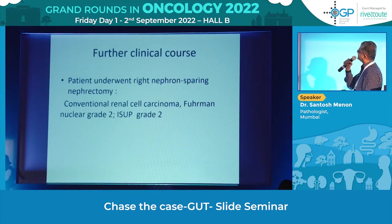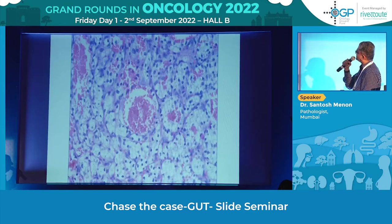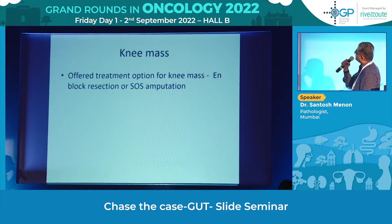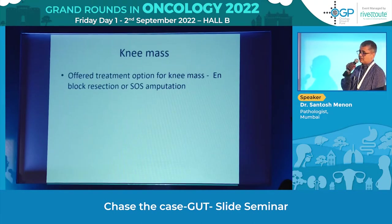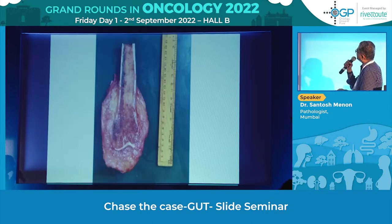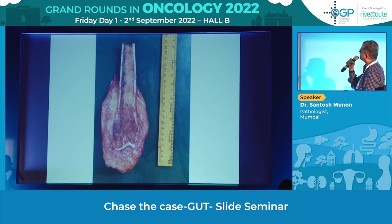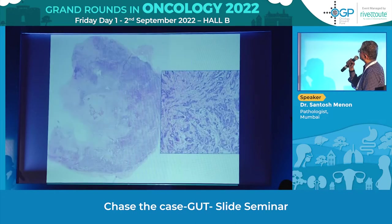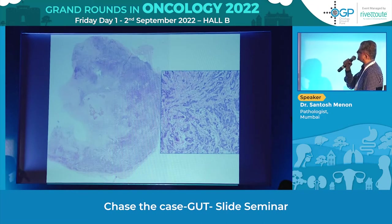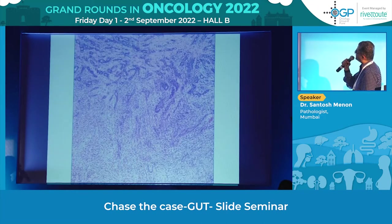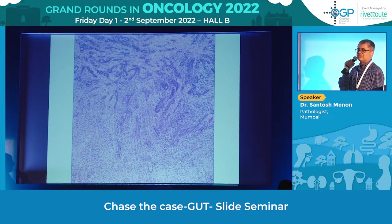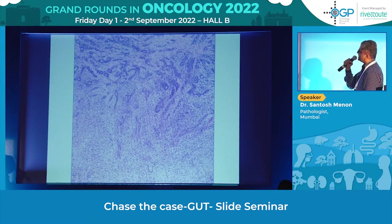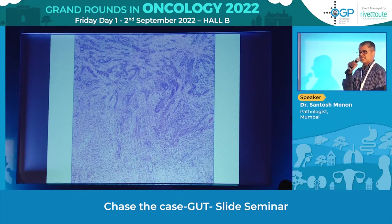The patient underwent right nephron-sparing surgery, which showed typical conventional renal cell carcinoma. The knee mass patient underwent an above-knee amputation. The resected specimen showed a grey-white tumour involving the lower end of femur with similar morphology — tubules and trabeculae of tumour cells within a hyalinized and somewhat desmoplastic stroma. There was one section showing biphasic morphology: tubules with the epithelial component, and very focally a spindle component. So it was actually a biphasic synovial sarcoma, but the sampling had captured the predominantly epithelial variety.